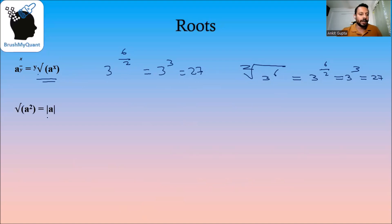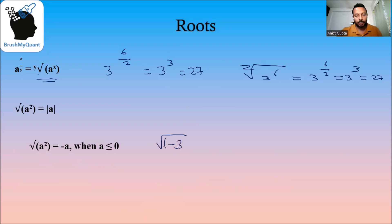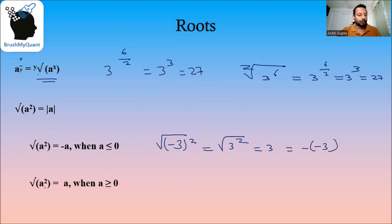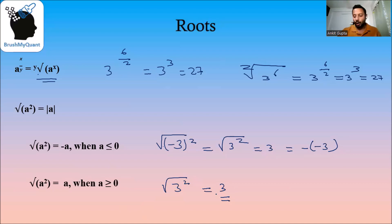√(a²) is equal to the absolute value of a, meaning the square root of a number is always positive. Specifically, √(a²) = −a when a ≤ 0 — for example, √((-3)²) = √(3²) = 3 = −(−3). And √(a²) = a when a ≥ 0 — so √(3²) = 3. Remember, the square root of a number is always positive.